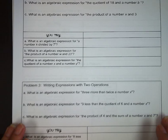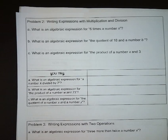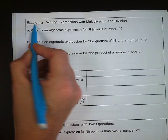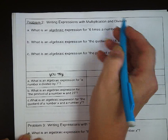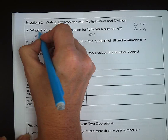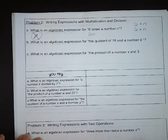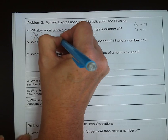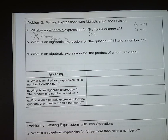Next up, problem number 2, writing expressions with multiplication and division. What is an algebraic expression for 6 times a number n? We could write it as just 6n or 6 dot n. Do not use the x for multiplication anymore. Never use that again. And the reason for this is we use x as a variable almost exclusively, and we don't want to be confused with our variables and our operations.